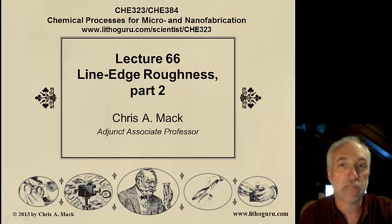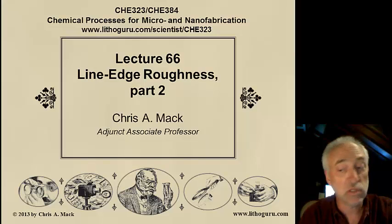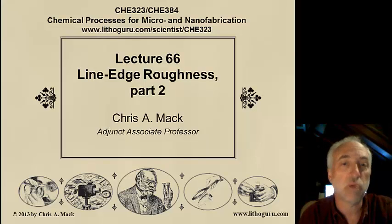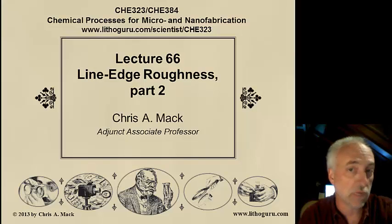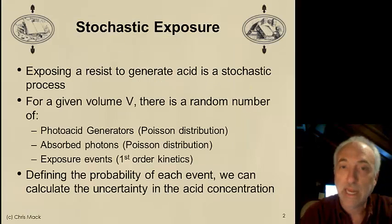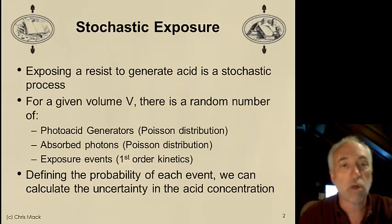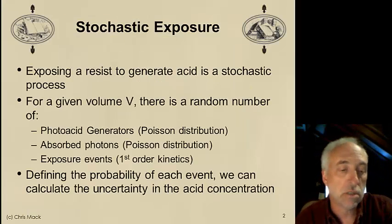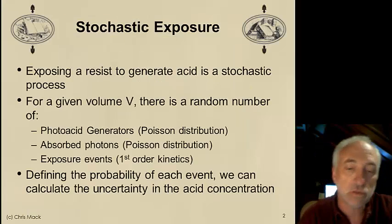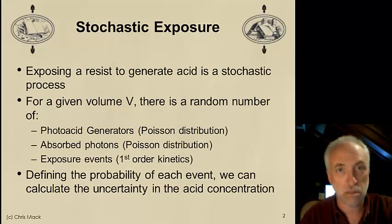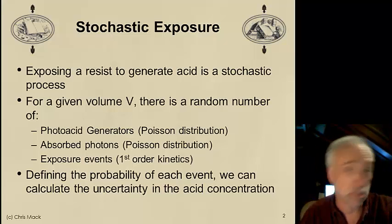This is Chemical Processes for Micro and Nanofabrication. I'm Chris Mack, and this is part two of what looks to be a three-part series on line-edge roughness. We're at Lecture 66. Last time we talked about two sources of randomness that occur when we expose photoresist.